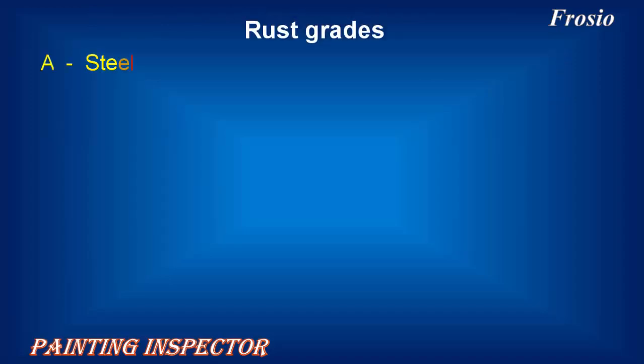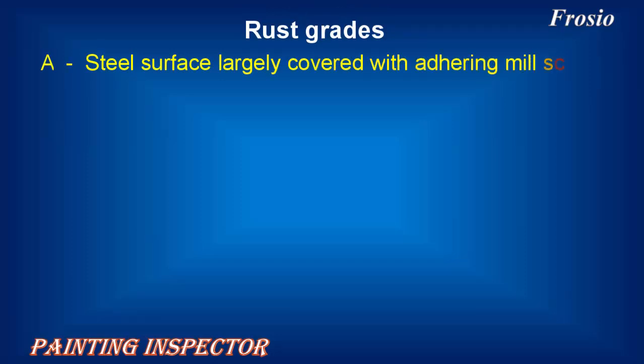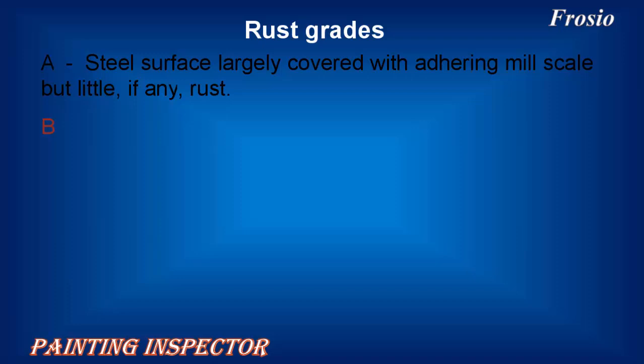Rust Grade A describes a steel surface largely covered with adhering mill scale but little, if any, rust. Rust Grade B describes a steel surface which has begun to rust and from which the mill scale has begun to flake.